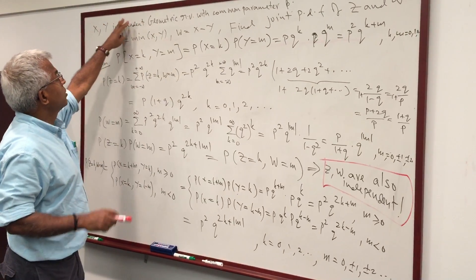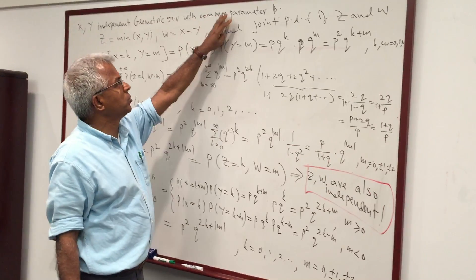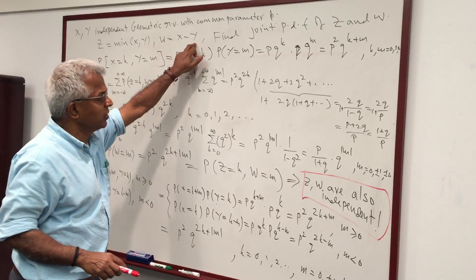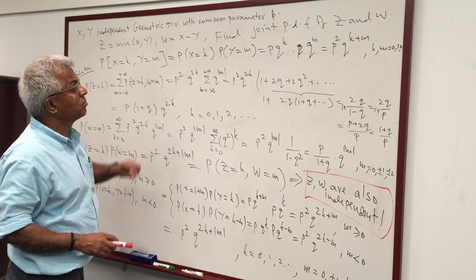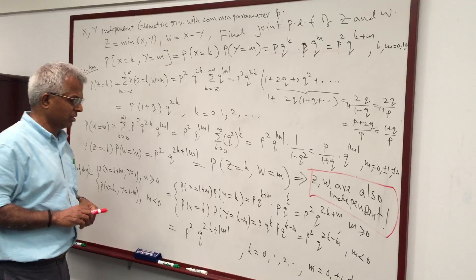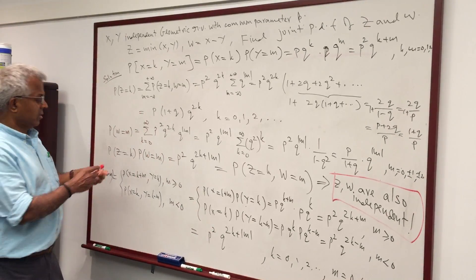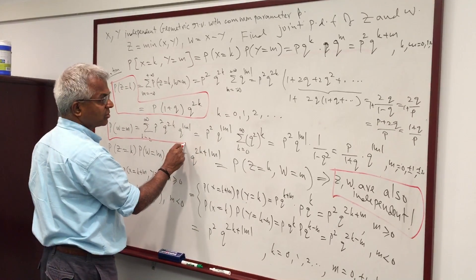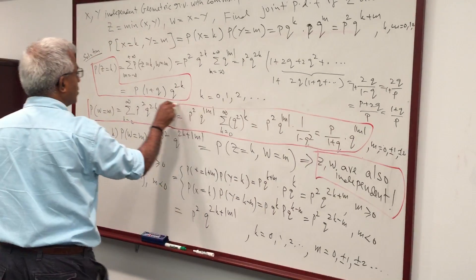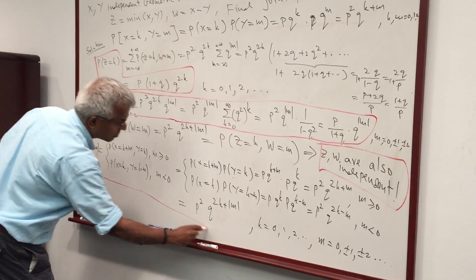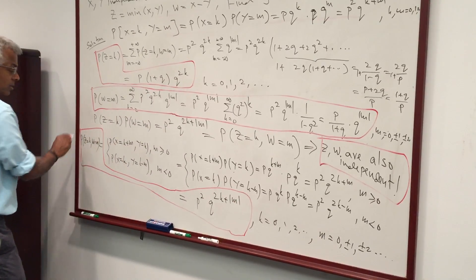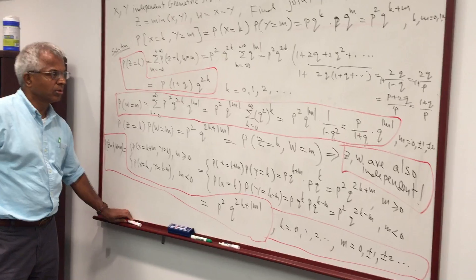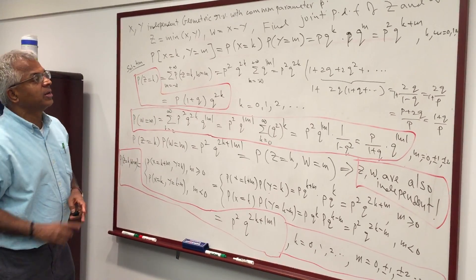So in a nutshell, this is the theorem: if you have two independent geometric random variables with a common parameter P and you consider Z = min(X,Y) and W = X−Y, these two new random variables are statistically independent. That is what we have just rigorously proved. The joint PMF, the marginals of Z and W, and the independence of Z and W have all been established, remembering to include the range in the joint density function.